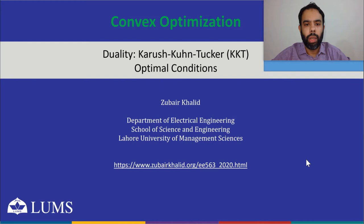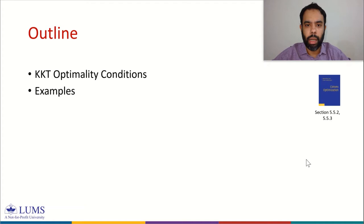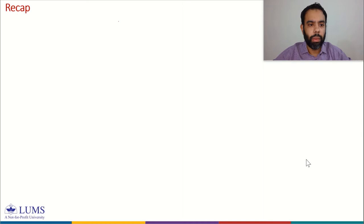In this module of the convex optimization course, we will continue our discussion on duality. In particular, we will talk about Karush-Kuhn-Tucker optimality conditions, and later we will review some examples to demonstrate the use of KKT conditions in solving optimization problems. Before we look at KKT optimality conditions, let us quickly review the concepts which we studied in the previous module.